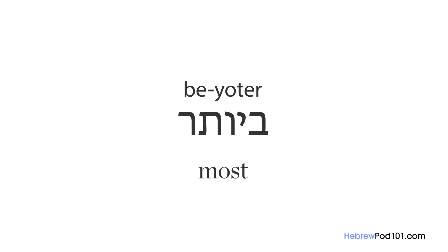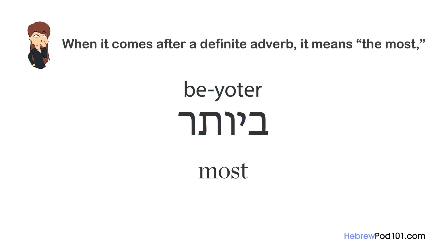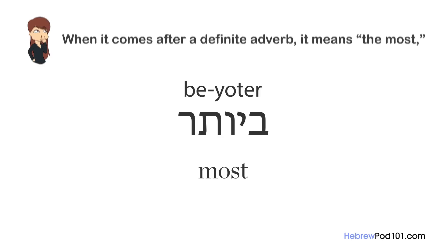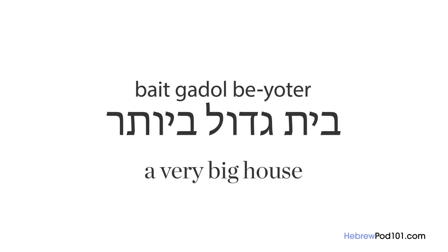The next adverb is 'be'yoter,' a lot like the word 'most.' It comes after the adjective. When it comes after a definite adjective, it means 'the most,' like in 'the biggest house' — 'habayit ha'gadol be'yoter.' When it comes after a verb or indefinite adjective, it means 'quite' or 'very much,' like in 'a very big house' — 'bayit gadol be'yoter.'